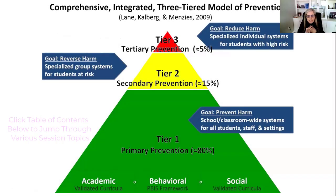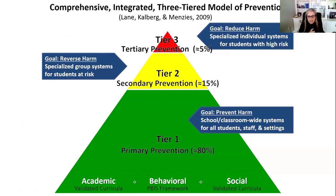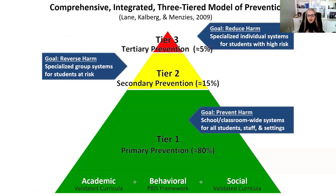All of the work that we do, we situate within a comprehensive, integrated, three-tiered model of prevention. This is a multi-tiered system — just like PBIS, RTI, or MTSS. What's unique about CI3T is that it is one model that addresses students' academic, behavioral, and social-emotional learning needs within one integrated model. We'll show you some examples of that integration as we move through the night.